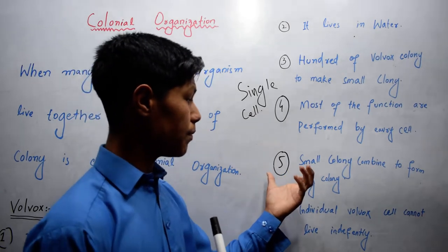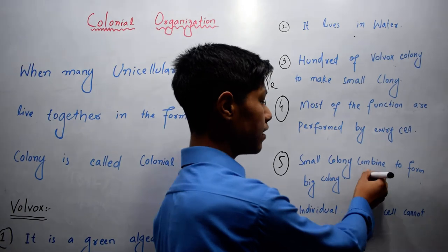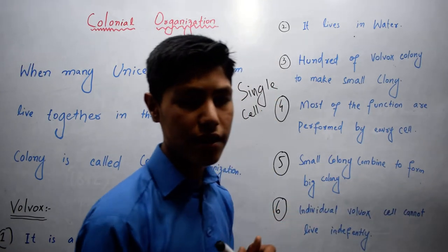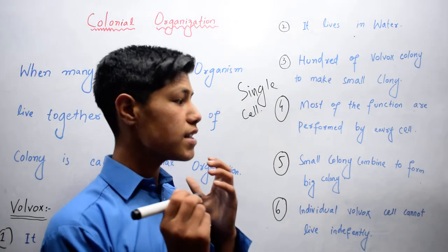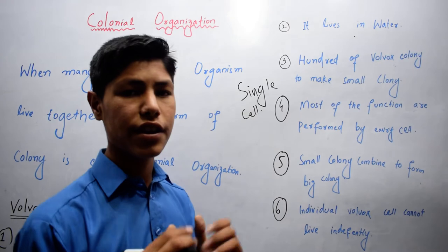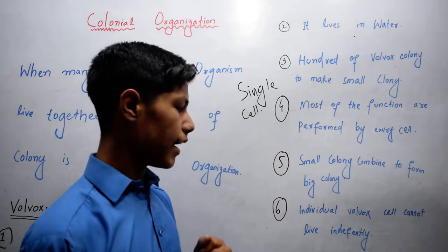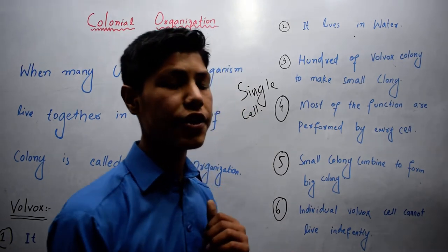Now comes the fifth point, which is when small colonies combine to form a big colony. In Volvox, when small colonies combine to form a very big colony.